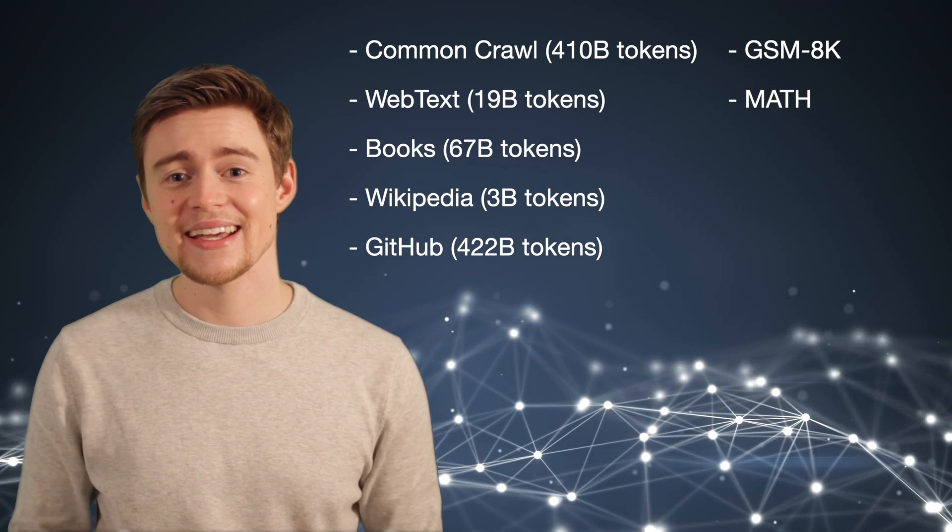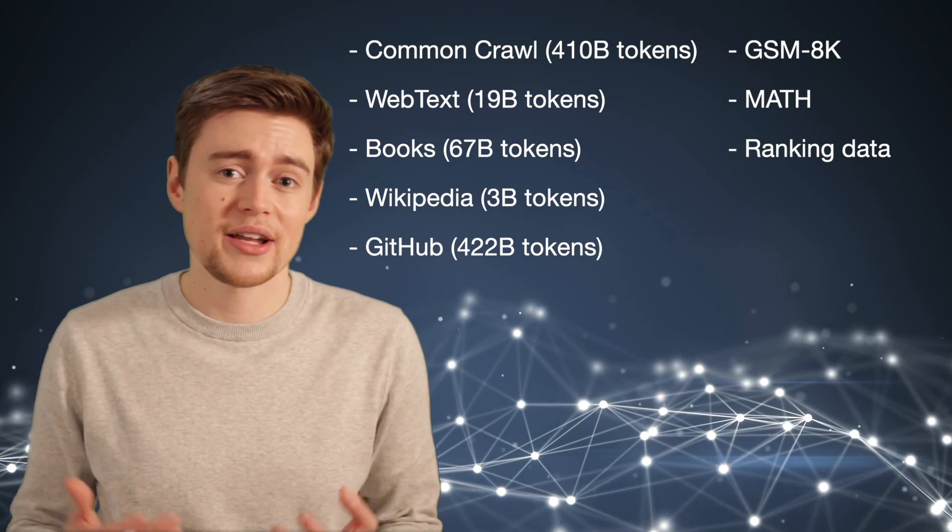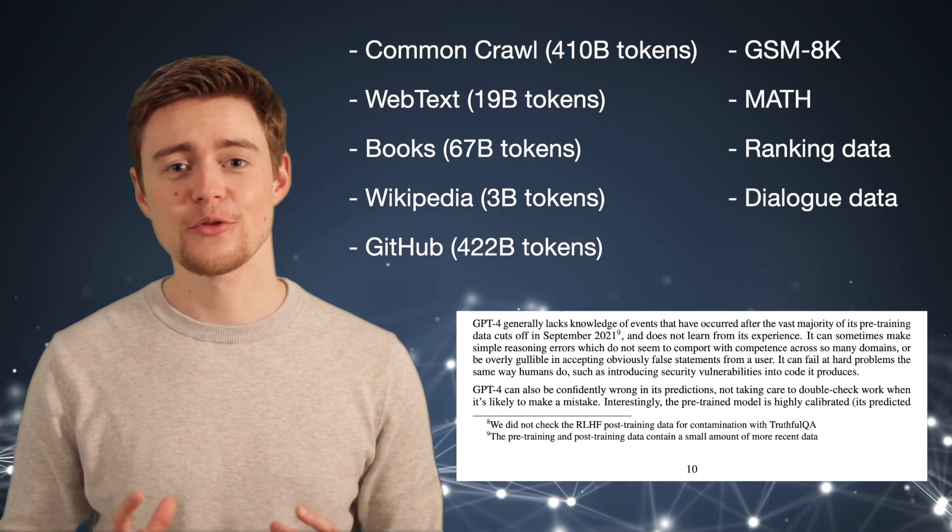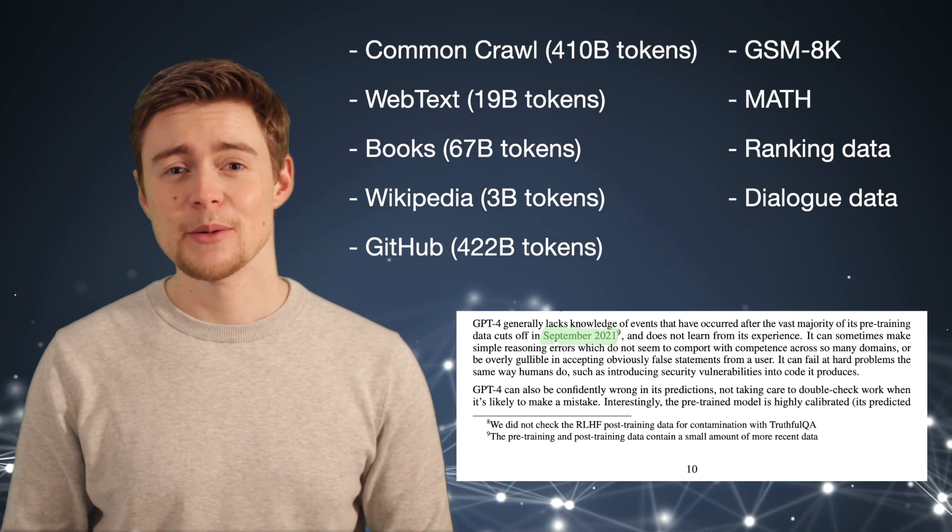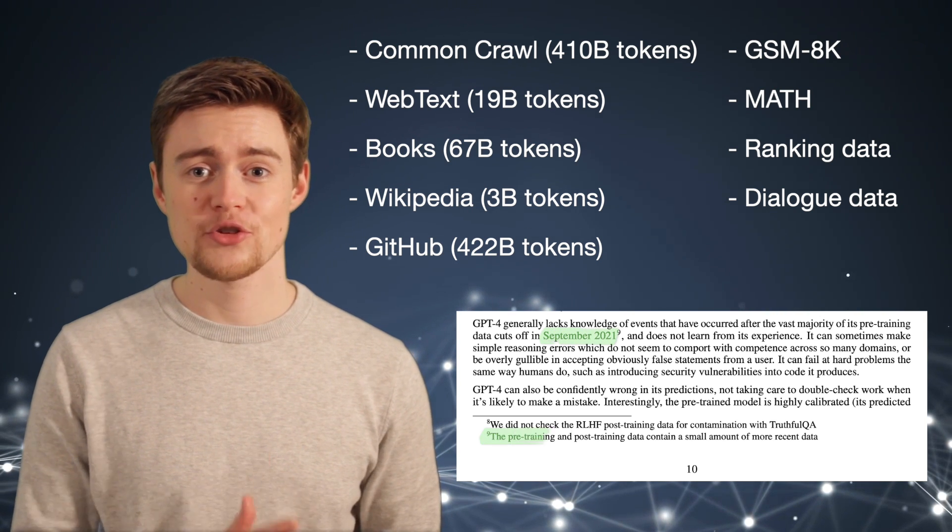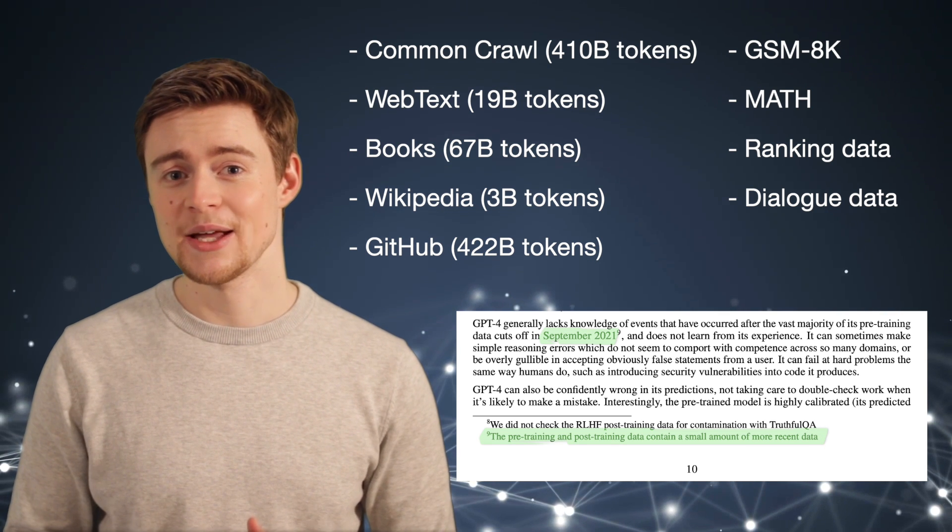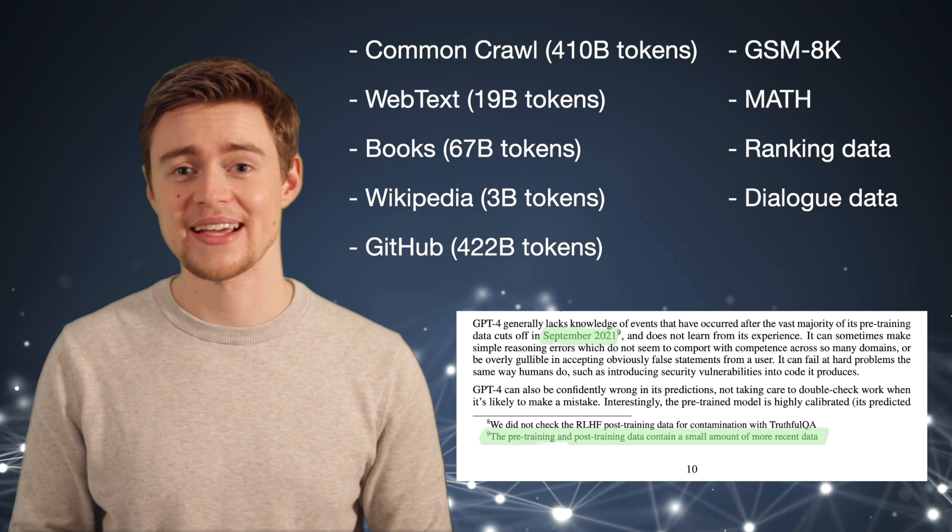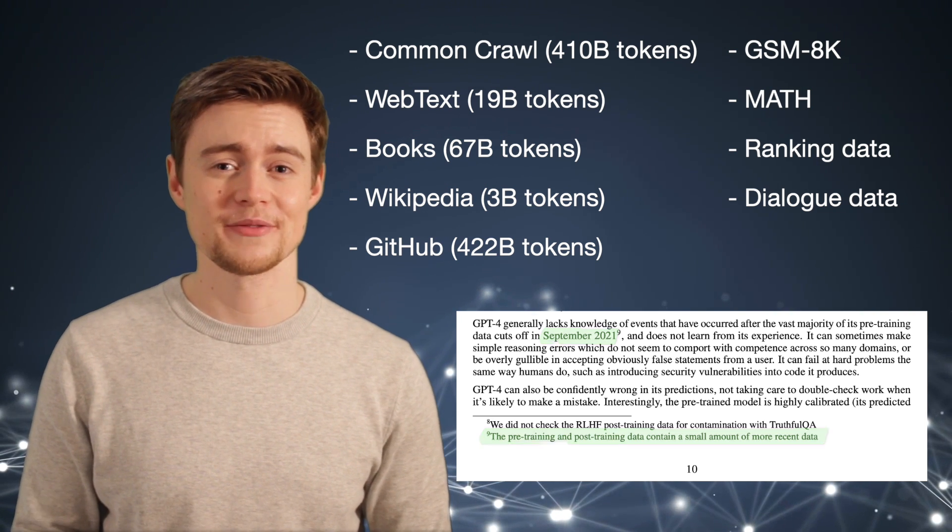And lastly, I assume they use more ranking data from human demonstrations and more dialogue data. The information cutoff for data is supposed to be the same as in ChatGPT, September 2021. But we can find in the footnotes that the pre-training and post-training data contain a small amount of more recent data. But how big is a small amount when your entire training dataset has trillions of tokens? This kind of phrasing can hide some relevant information.